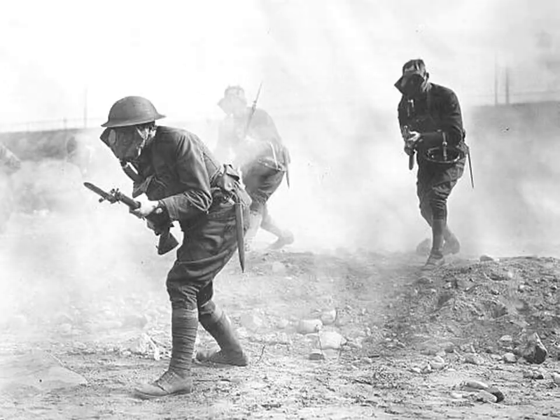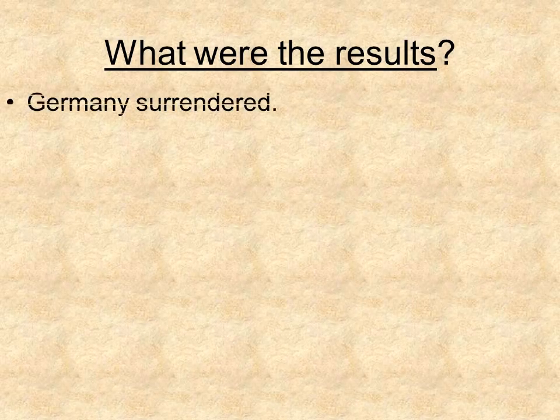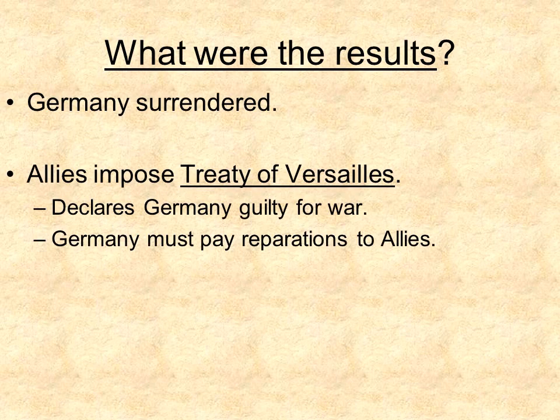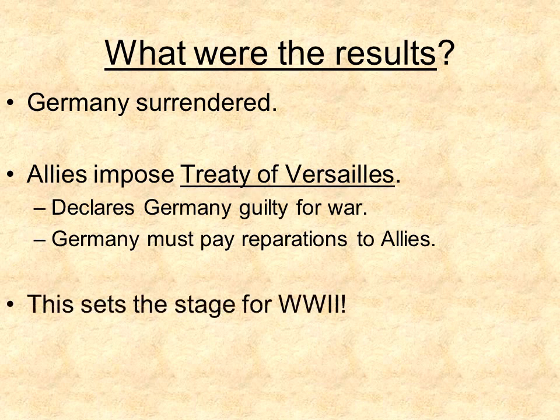The result of this war was that Germany surrendered. The Allies — Russia, France, and Great Britain — signed the Treaty of Versailles. Germany was punished under the treaty with different levels of restrictions on their population, arms, and economic activity.